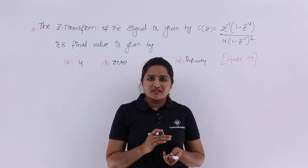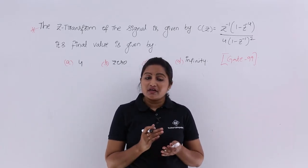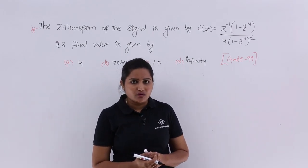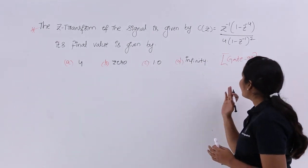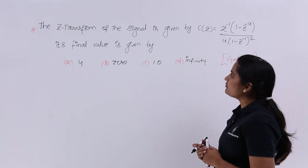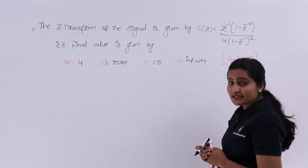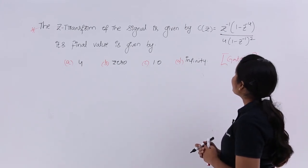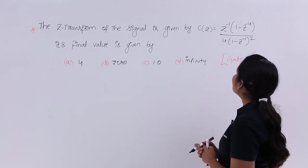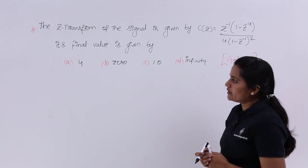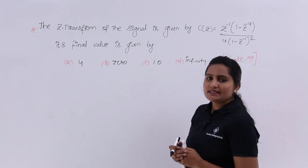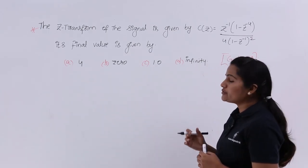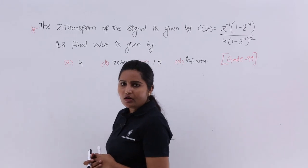In this video we are going to discuss one more GATE problem related to the final value theorem in Z-transform. This problem is from GATE 99. The Z-transform of the signal is given by C(Z) = Z⁻¹(1 - Z⁻⁴) divided by 4 into (1 - Z⁻¹) whole square. The final value options are 4, 0, 1, or infinity.